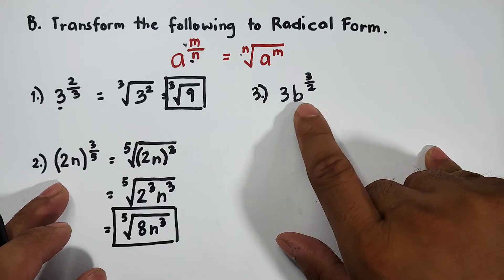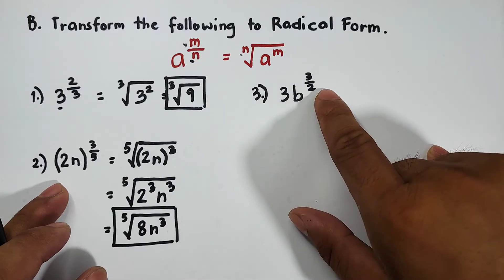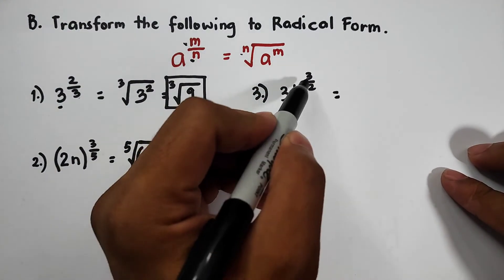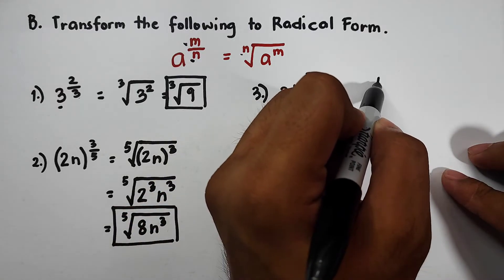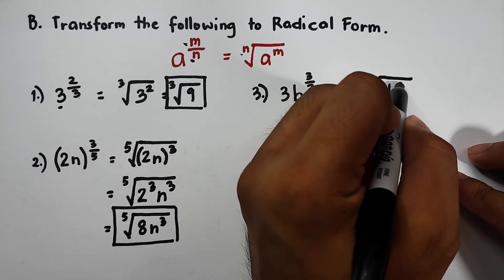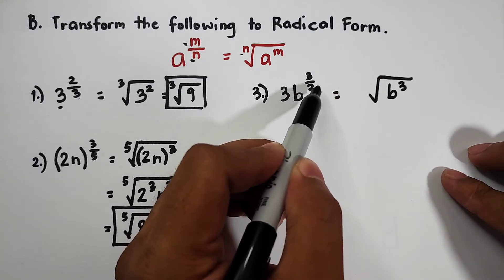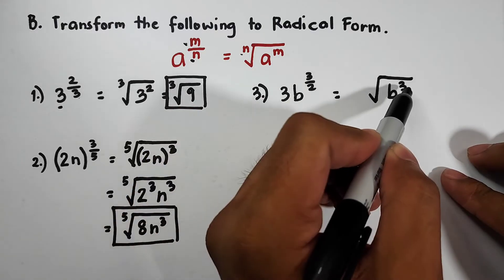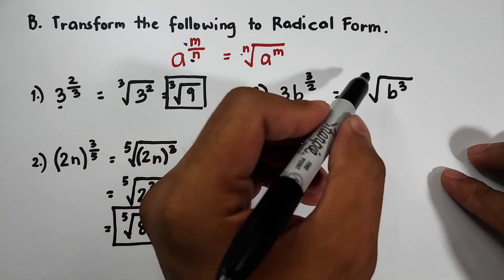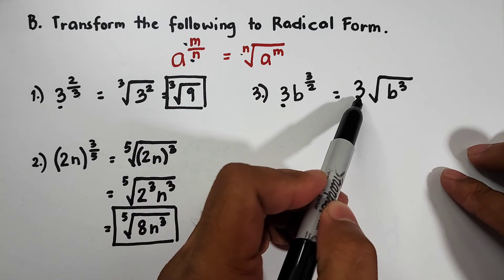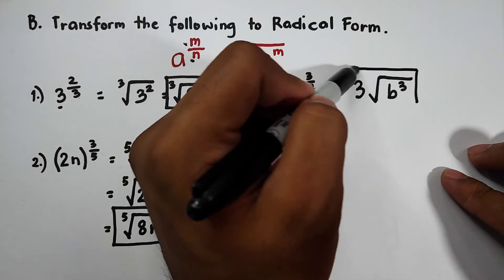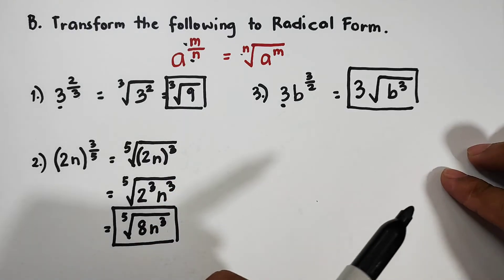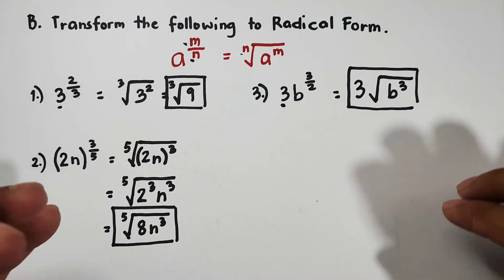For item number three, compared to number two, here the only base raised by the rational exponent 3 over 2 is simply b — the 3 is not included. So we get the square root of b cubed. The index is 2, which can be expressed as an invisible index, and the numerator exponent 3 becomes the exponent of the radicand. The 3 will be put outside the radical sign as a coefficient, so the answer is 3 times the square root of b cubed.